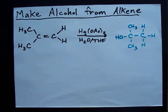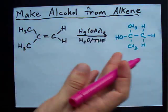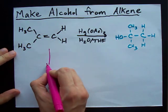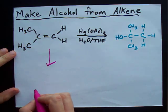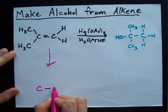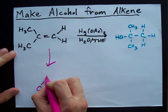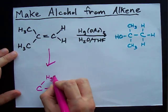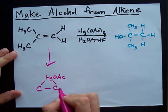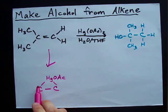But the point here is that this happens via a couple different steps. The first step is that this double bond breaks open and an HGOAC attaches to each of them. You get this triangular shape.